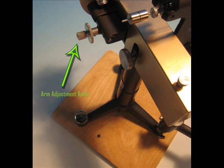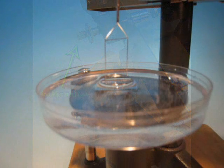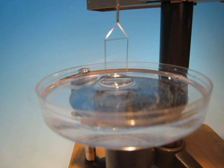Repeat this process of slowly lowering the sample until the pointer moves below the mirror line and moving it back to the mirror line with the arm adjusting knob. With this process, the ring slowly pulls through the liquid surface creating a meniscus.